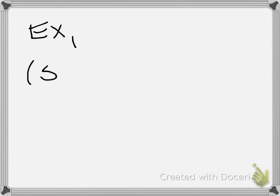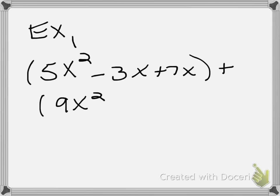Example one: (5x² - 3x + 7x) + (9x² + 2x² + 7x). You are adding two polynomials.